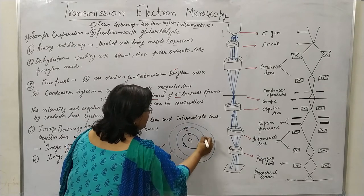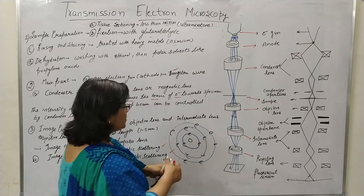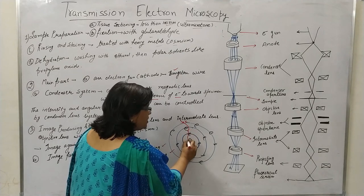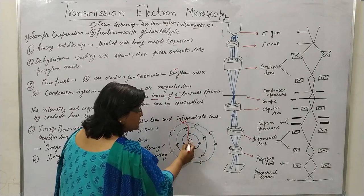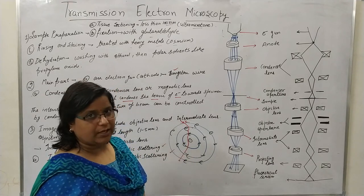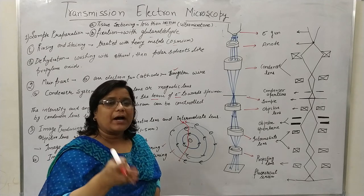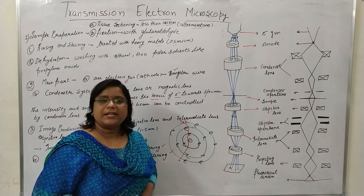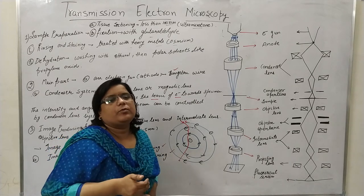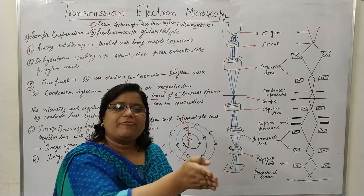Now, the primary electrons are coming toward the atom. When these primary electrons pass close to the nucleus, the nucleus is positive charge and the electrons are negative charge. So there is an attraction between the nucleus and the incoming primary electrons.